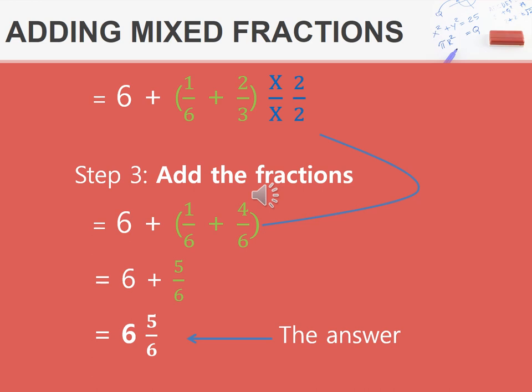We therefore write down our whole number, which is 6, plus 6 as a denominator. Then we add our numerators, which is 1 plus 4, which gives us 5 over 6. Once we add our fraction plus the whole number, we eventually get an answer of 6 and 5 over 6.